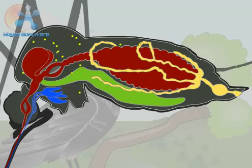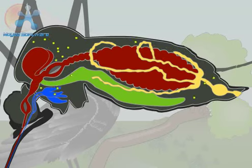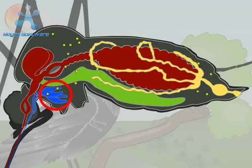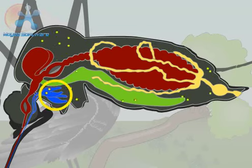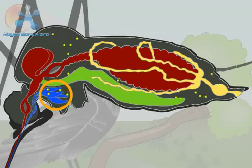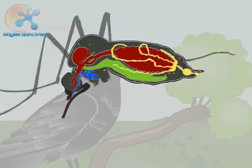Over time, the virus replicates within the mosquito's blood and eventually invades the insect's salivary glands. The virus is now poised to infect a new host.